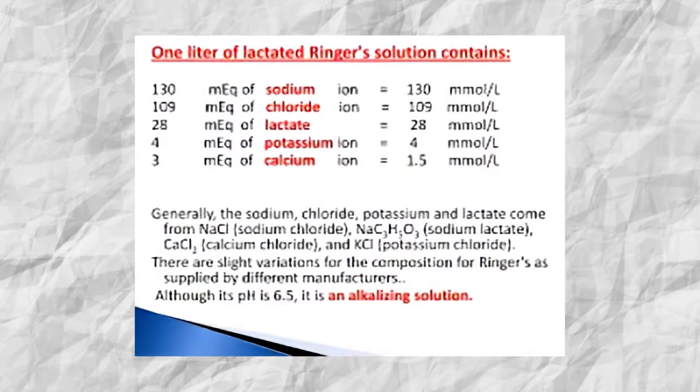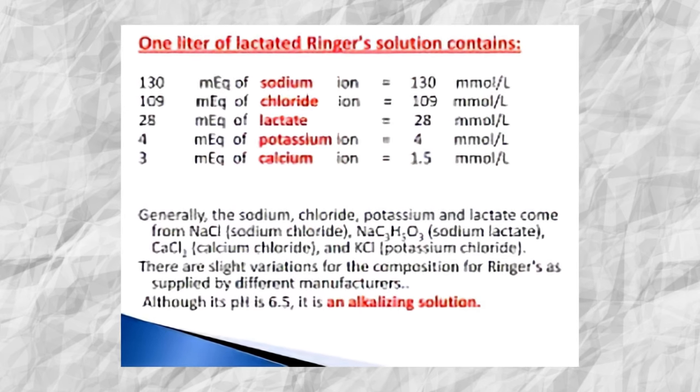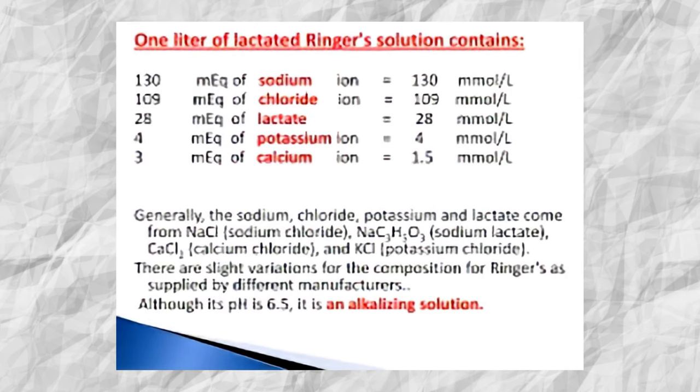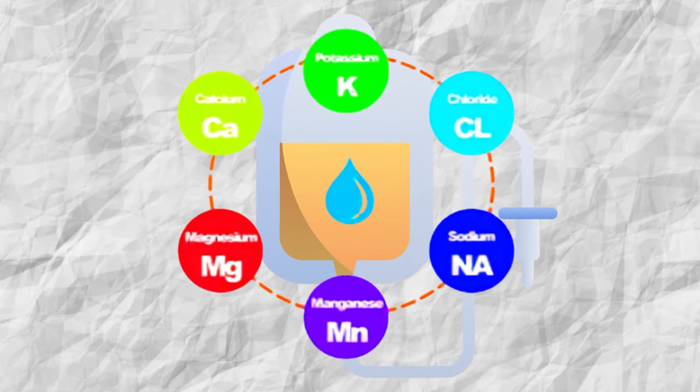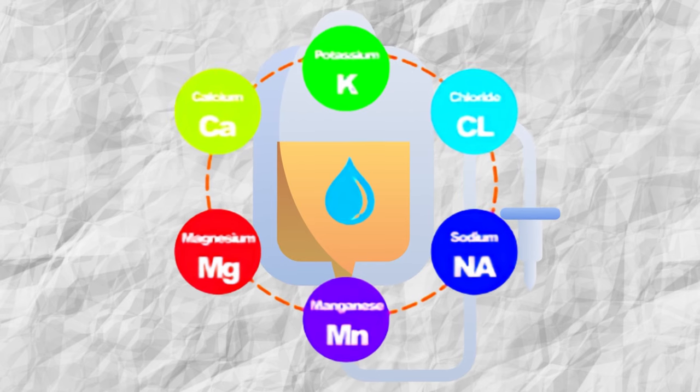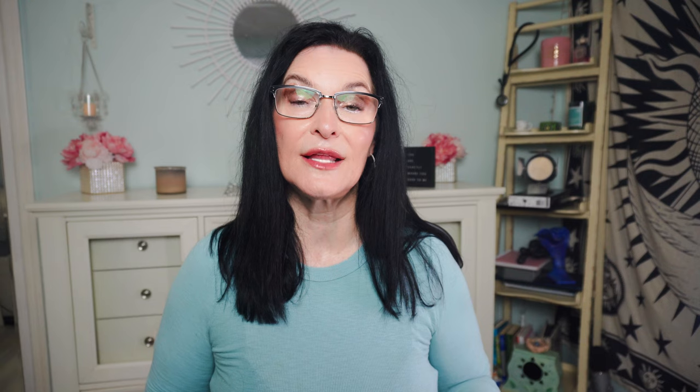Some isotonic solutions like lactated ringers or Normosol contain a balanced composition of electrolytes — sodium, potassium, calcium, and chloride — that closely resemble the electrolyte composition of blood plasma. They are used to correct electrolyte imbalances or provide electrolyte support when needed.